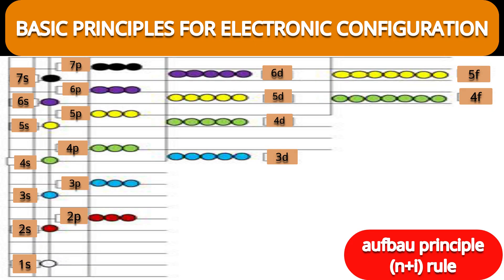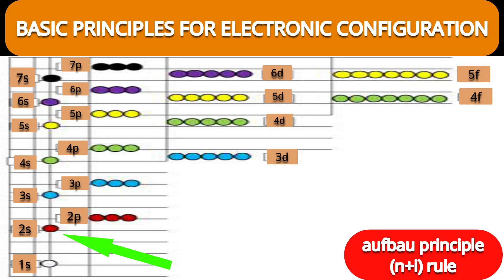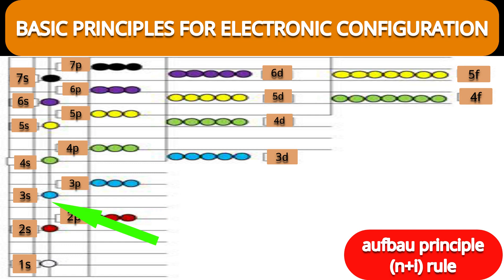I have represented energy levels using different colors for different shells. For the first shell, there is only one subshell and one orbital, that is 1s, represented by white color — it is the lowest energy orbital. The second shell has two subshells and four orbitals total: 2s and 2p. Energy of 2s is lower and 2p is higher. For the third shell, 3s, 3p, and 3d are the three possible subshells.